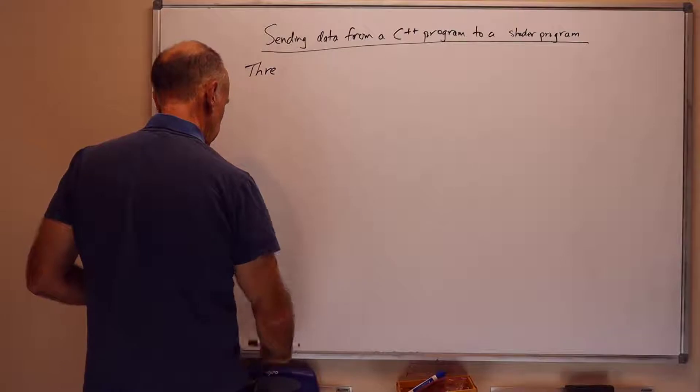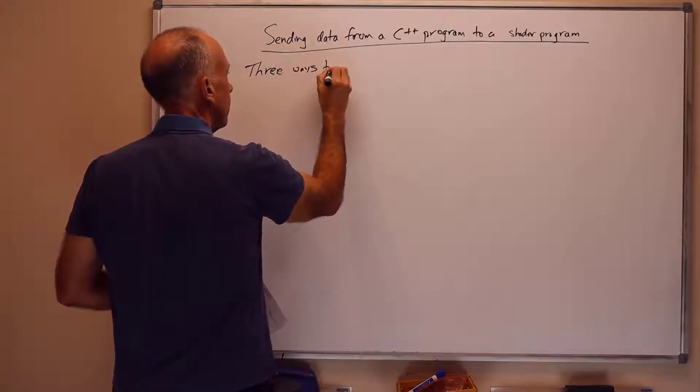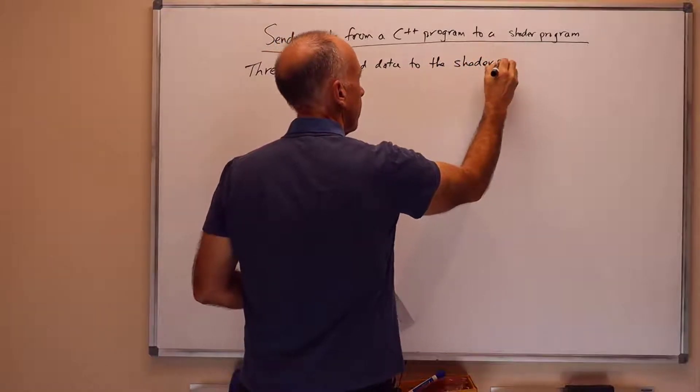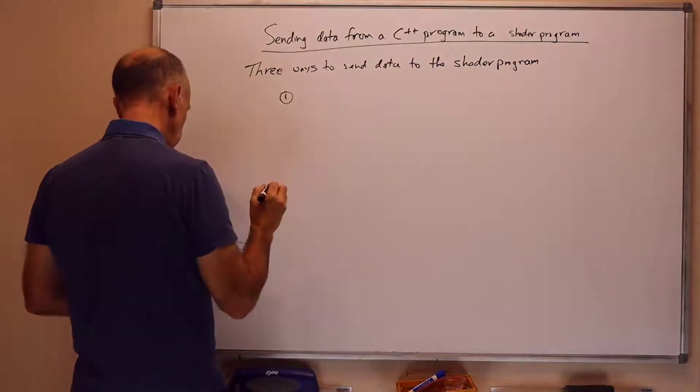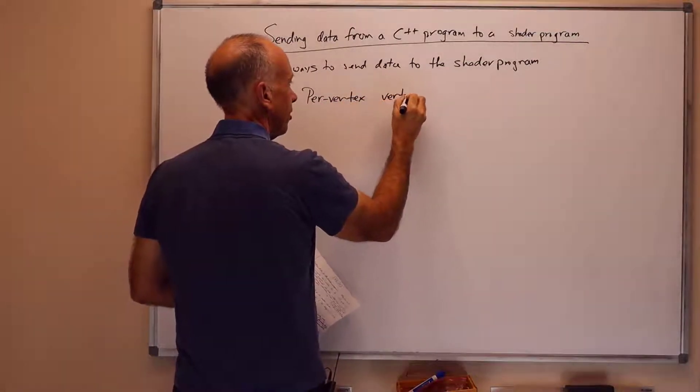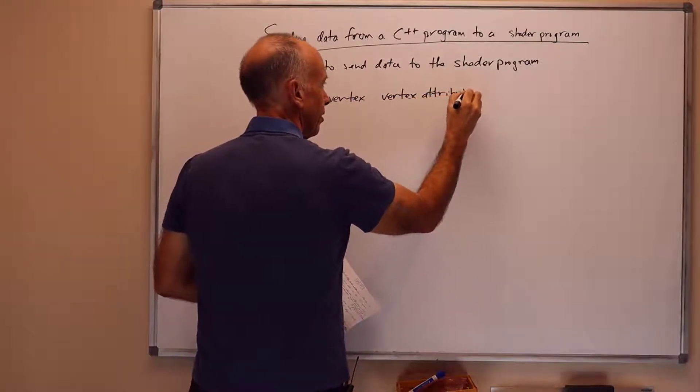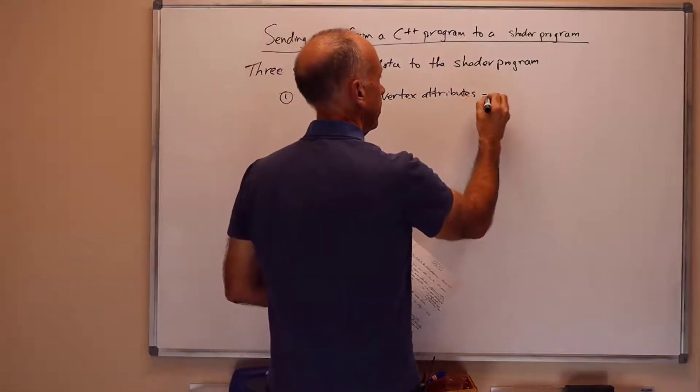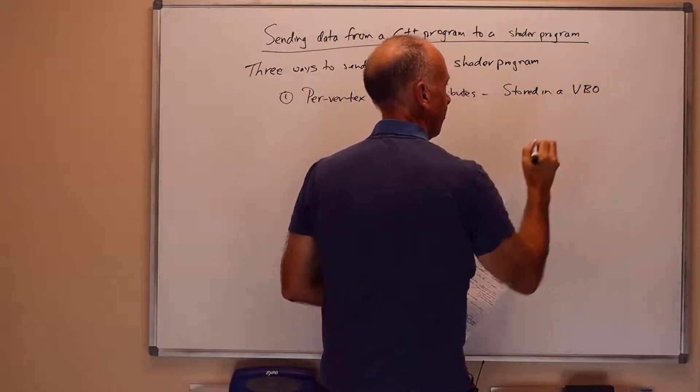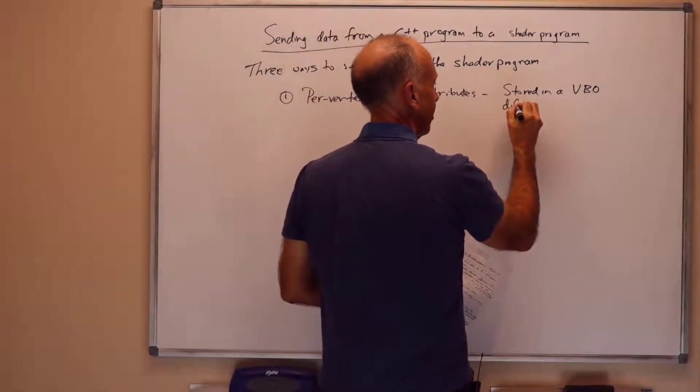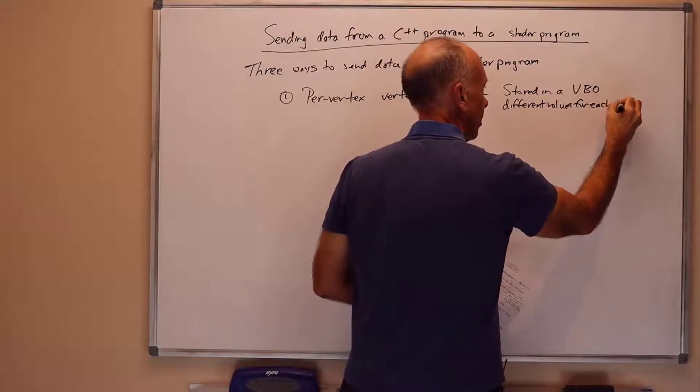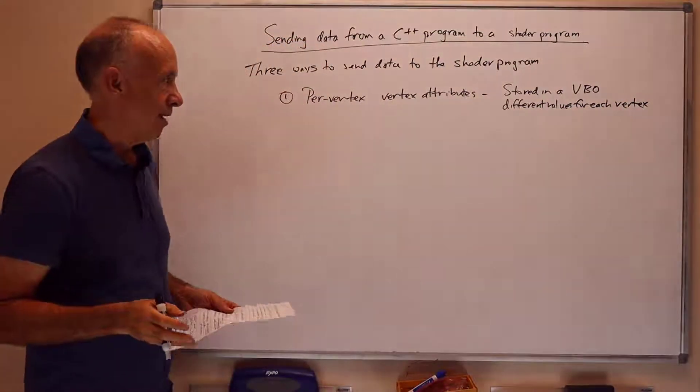Three ways to send data to the shader program. Number one is per-vertex vertex attributes. So a vertex attribute means a data value that's associated with a particular vertex, say the node of a triangle, a vertex corner of a triangle, and so on. And these are stored in the VBO. The VAO tells where to find the stuff in the VBO, but the data itself is in the VBO. In particular, it's generally different values, or can be different values, for each vertex in the VBO.